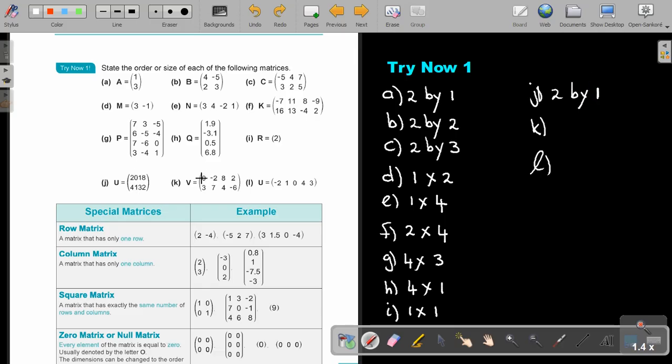And then, this one. There's two rows. And how many columns? One, two, three, four.